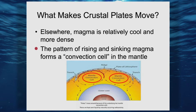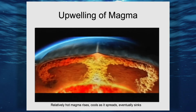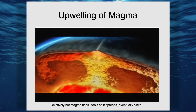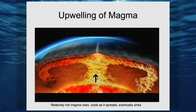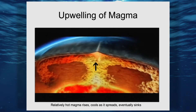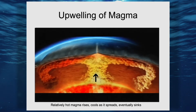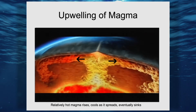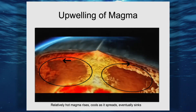There's one convection cell going counterclockwise and one going clockwise. If a crustal plate is on top of one of these cells, it will be carried along by the cell. The animation shows the core and the heat escaping, the upwelling of magma as it is heated, and as the density decreases, it goes up and spreads out — and we can see those two convection cells.